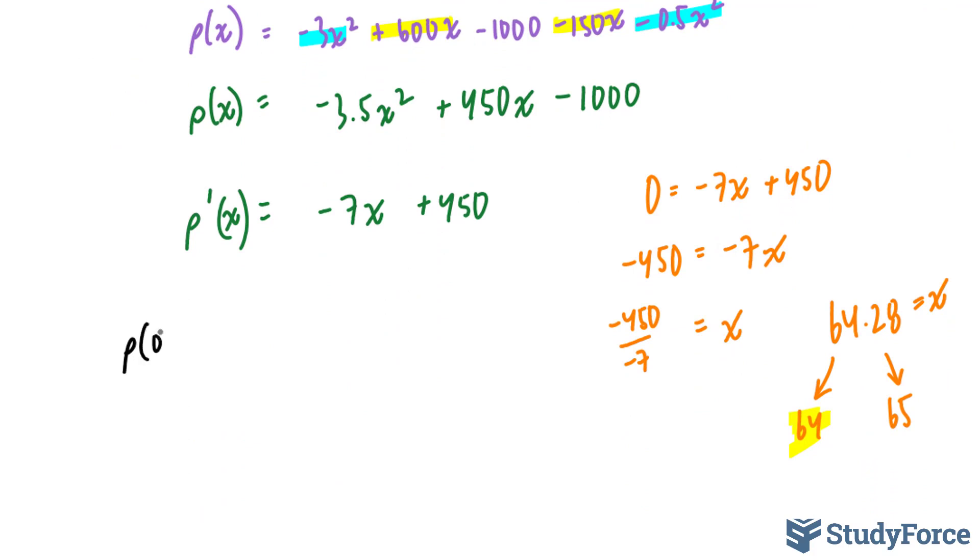When little p is at 0, this term goes to 0 because 0 to the power of 2 is 0 times anything is 0. This term also goes to 0. And this term goes to -1,000. So if you don't produce anything, you're going to be negative 1,000 profit dollars.